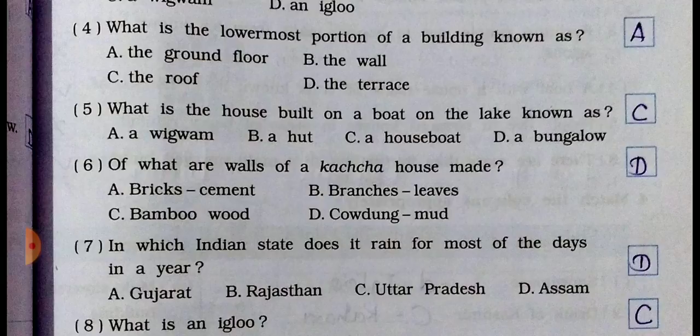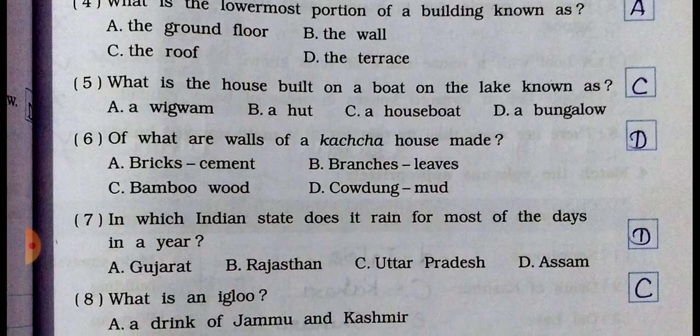Question number six: what are the walls of a kachya house made of? Option A: brick and cement. Option B: branches and leaves. Option C: bamboo and wood. Option D: cow dung and mud. D is the right answer — cow dung and mud. The walls of a kachya house are made from cow dung and mud.